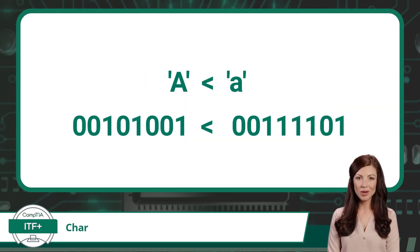Here we will compare capital A and the lowercase A of the Latin alphabet. Once the letters are converted to their binary values, you can then see that the binary value for capital A is less than the binary value for lowercase A.